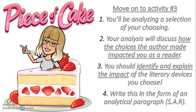So here's what I want you to do next. Now that you've looked through one mentor text, I want you to move on to Activity Three. You'll be analyzing a selection of your choosing. Your analysis is going to discuss how the choices the author made impacted you as a reader. You should identify and explain the impact of the literary devices that you choose, and you'll write this in the form of an analytical paragraph or an SAR. I'm going to write my own answer on Gone Girl, the mentor text, so that you'll have something to look at as an example. But you'll write based on something that you read this week, be it a short story or the book that you're reading — or if you need something to read, let me know and I can shoot you over a mentor text that you can read and analyze for this week.